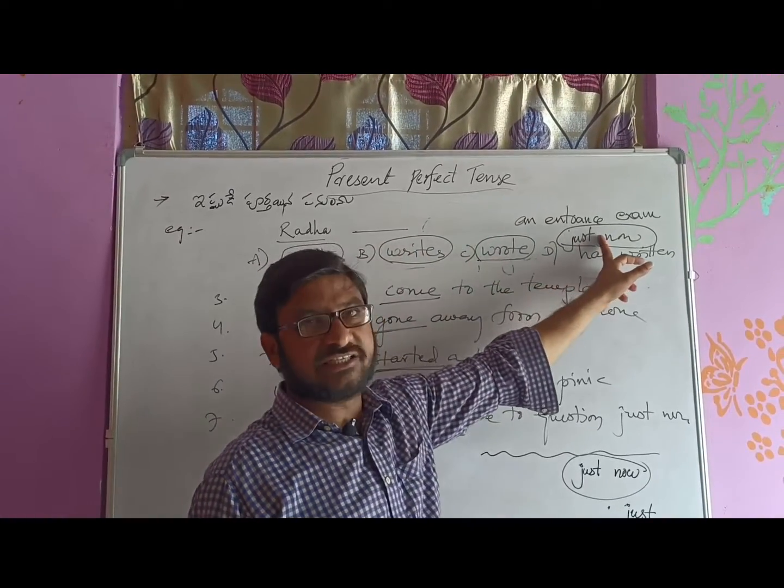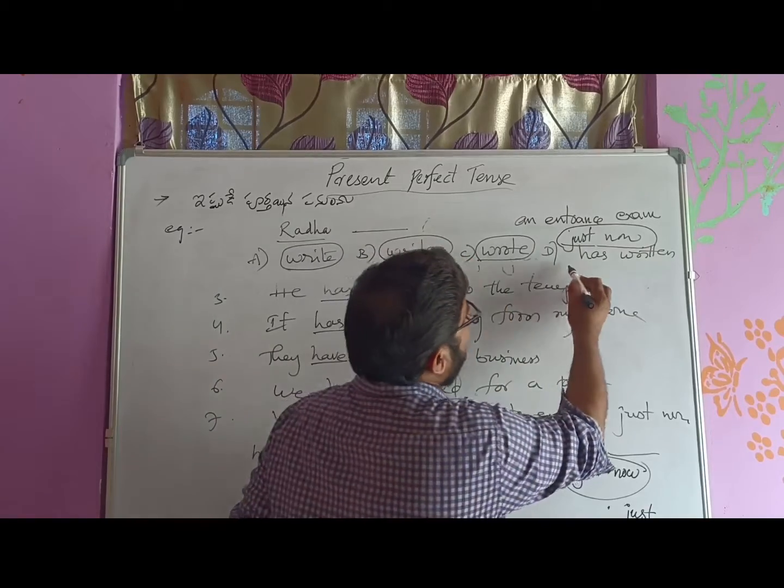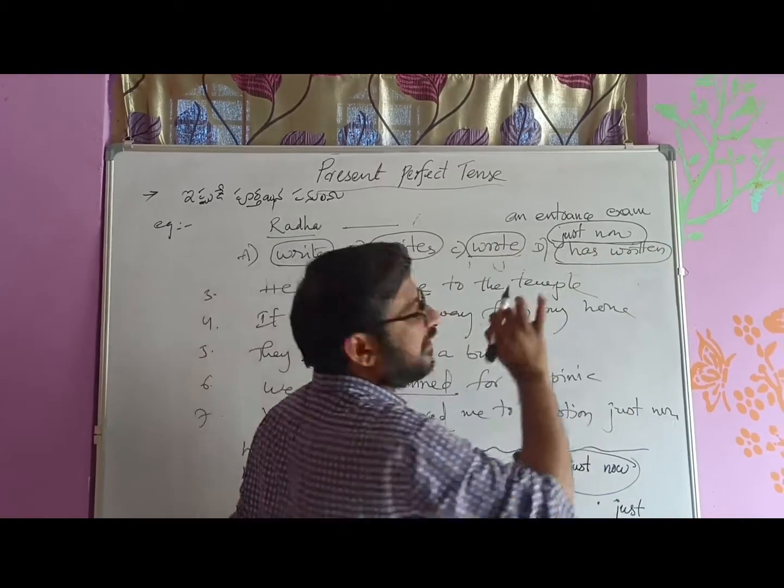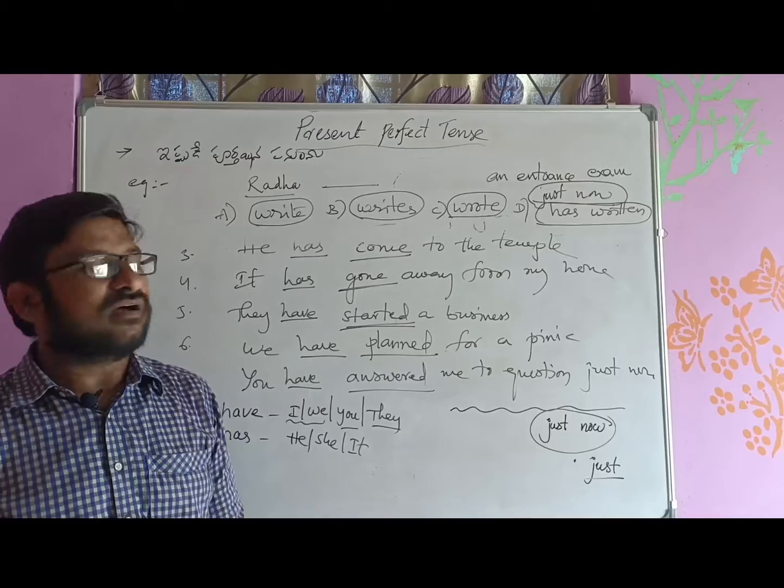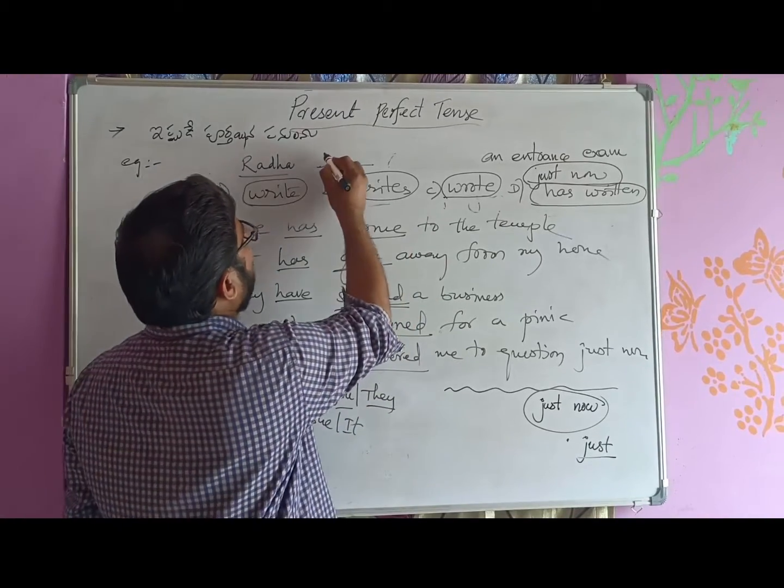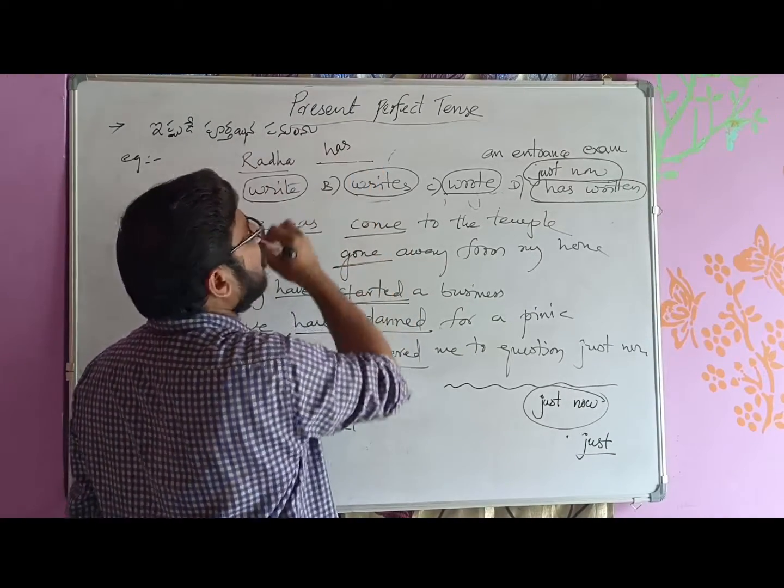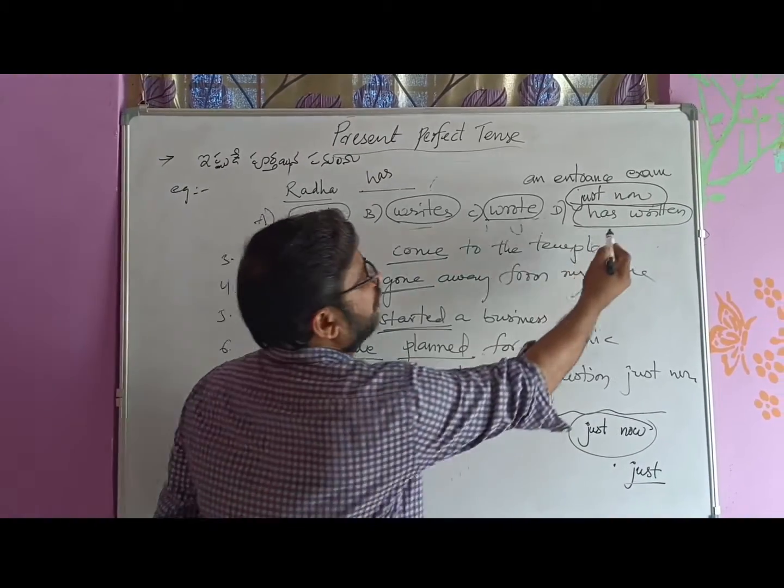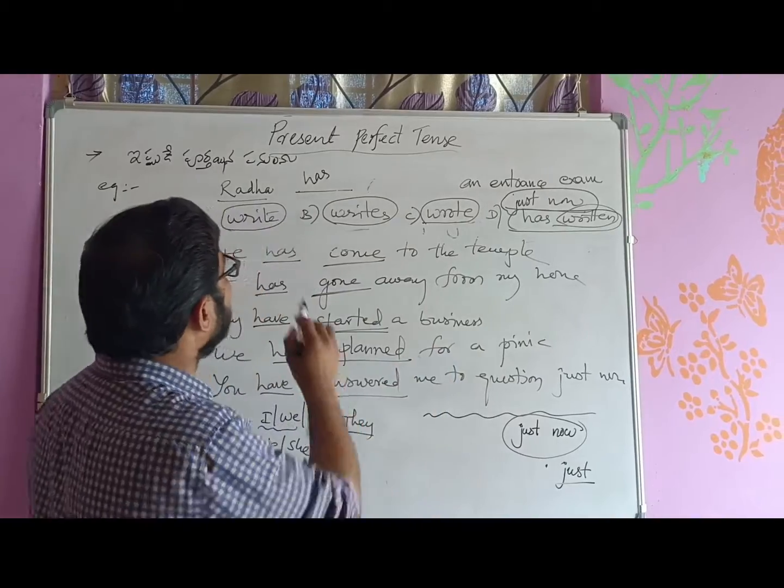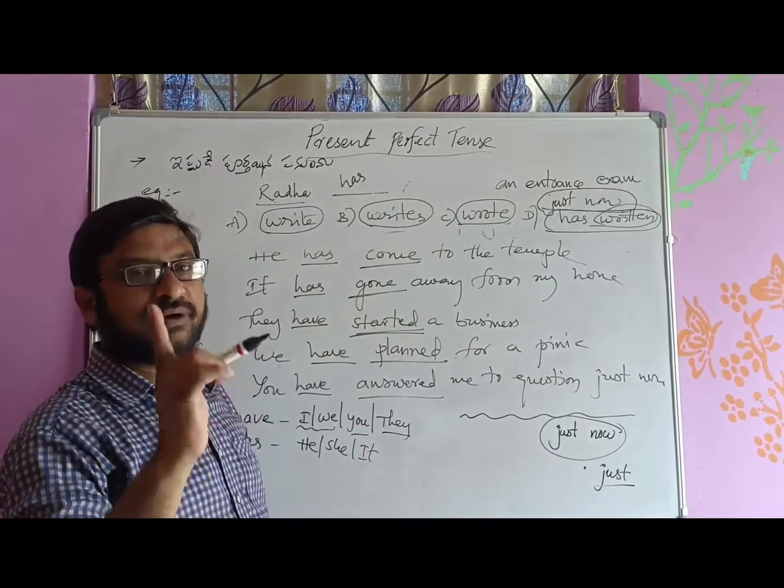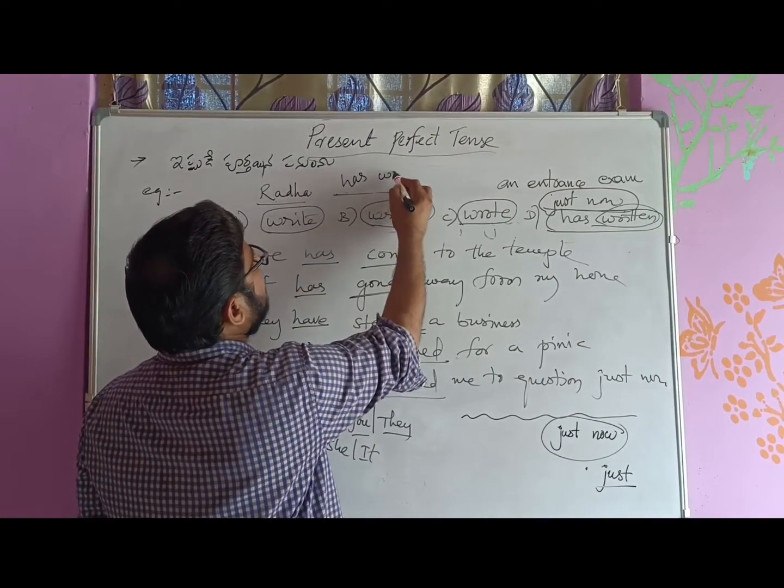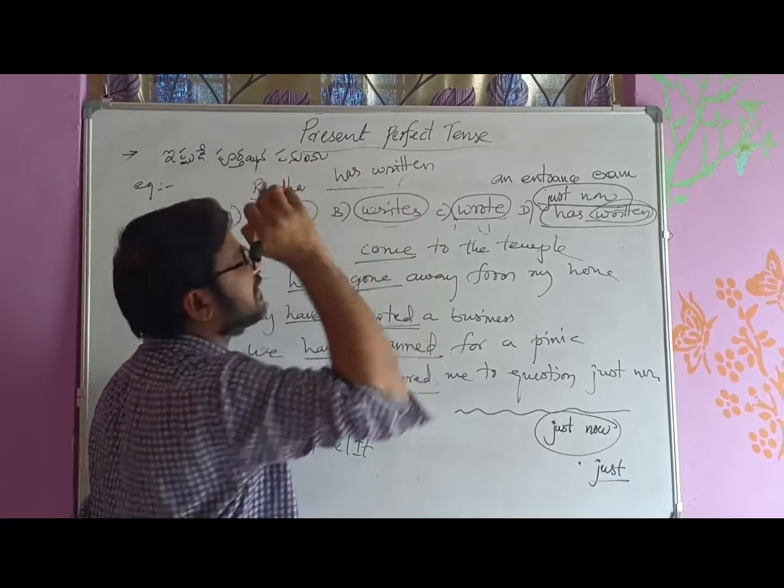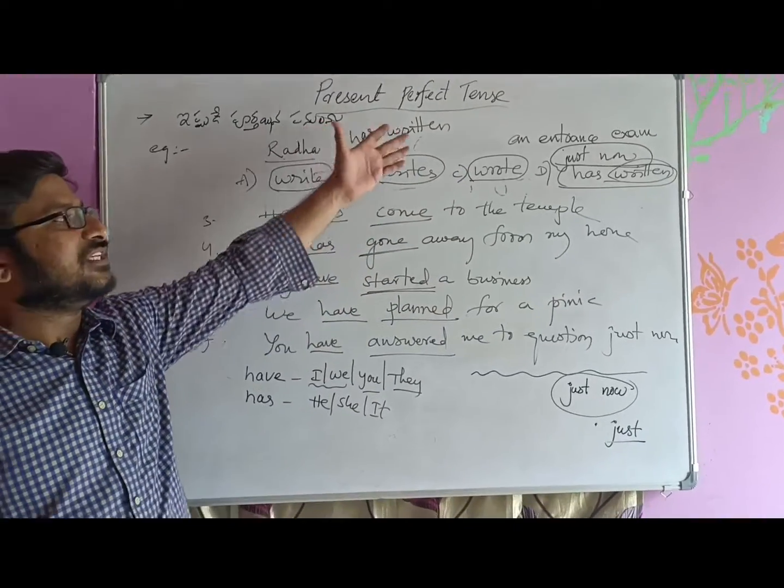The clue word shows Present Perfect uses has or have as auxiliary verbs, and the verb is always in third form. The verb third form is 'written'. Radha is third person singular, so we use 'has'. Therefore, the answer is: Radha has written an entrance exam just now. This is the appropriate answer.